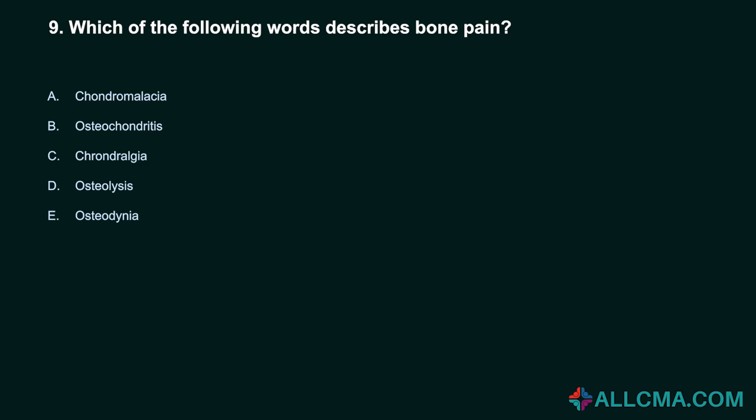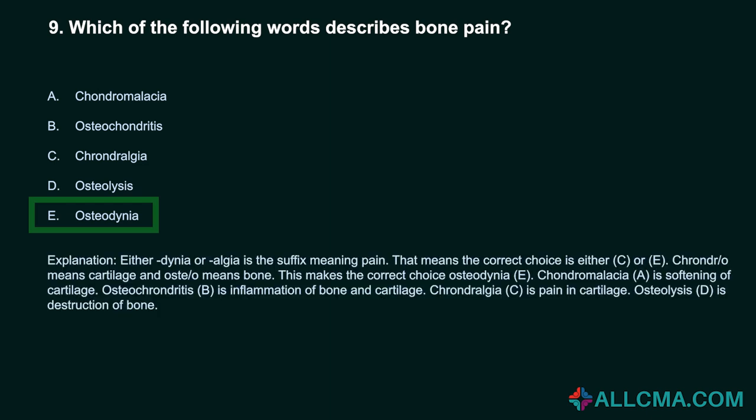Question 9: Which of the following words describes bone pain? A. Chondromalacia. B. Osteochondritis. C. Chondralgia. D. Osteolysis. E. Osteodynia. Correct answer: E. Osteodynia. Either -dynia or -algia is the suffix meaning pain. Chondr/o means cartilage and ost/o means bone, making osteodynia the correct choice. Chondromalacia is softening of cartilage. Osteochondritis is inflammation of bone and cartilage. Chondralgia is pain in cartilage. Osteolysis is destruction of bone.